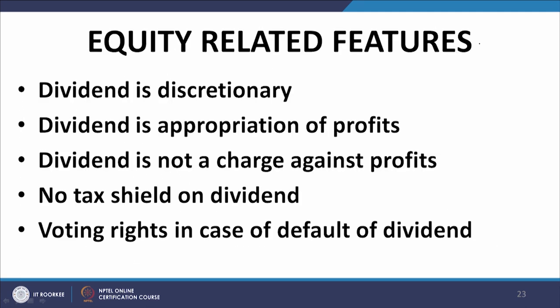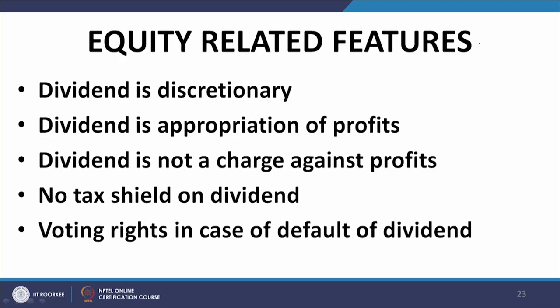As for equity-related features, here lies the reason why we call the return on preference shares 'dividend' and not 'interest.' Dividend is discretionary — the company has discretion in so far as payment of dividend is concerned even on preference shares. A company may have profits and even then it may decide not to pay dividend to preference shareholders. However, interest is a mandatory payment — the company must pay interest irrespective of the outcome of operations. So dividend is discretionary; interest is mandatory — and preference shareholders' dividend is also discretionary.